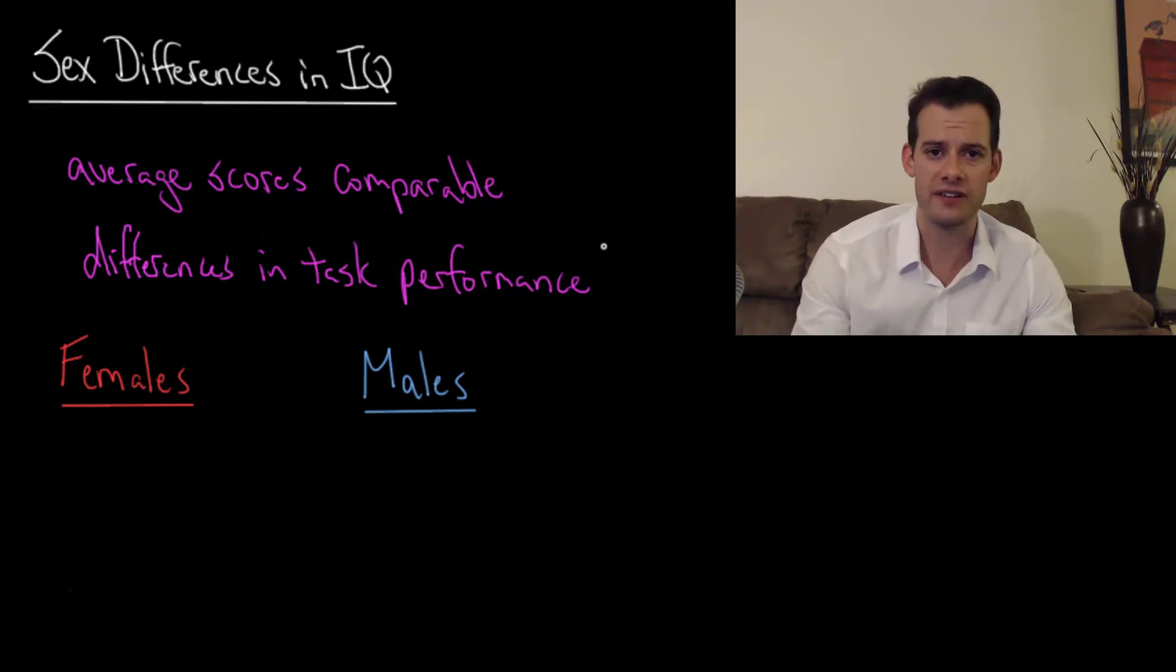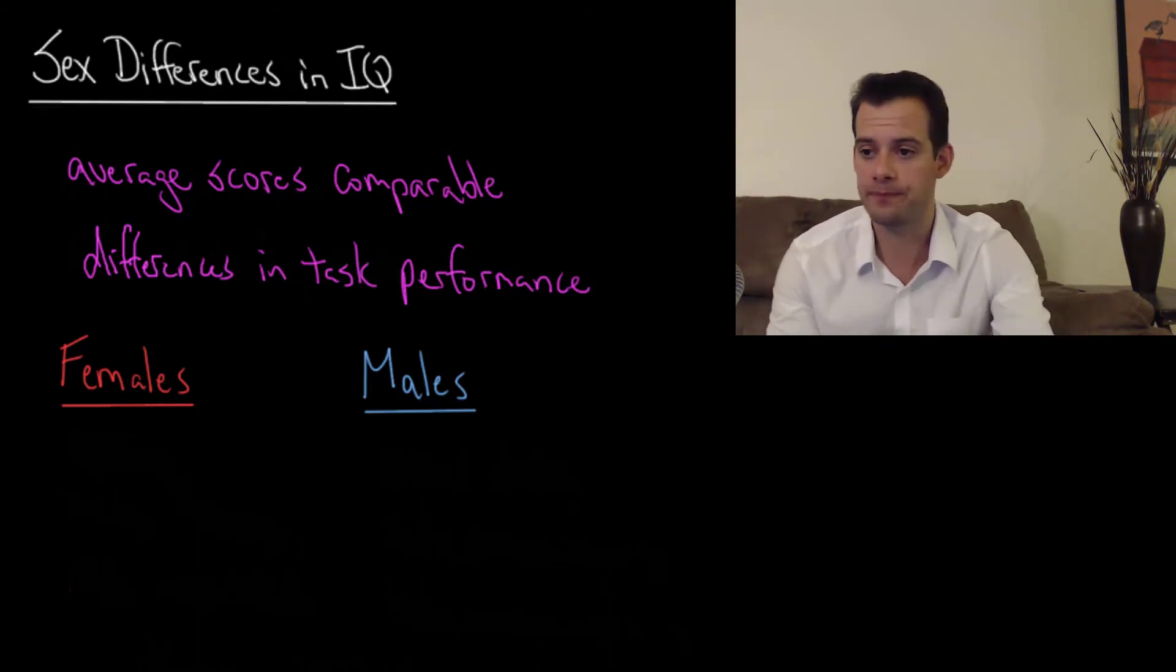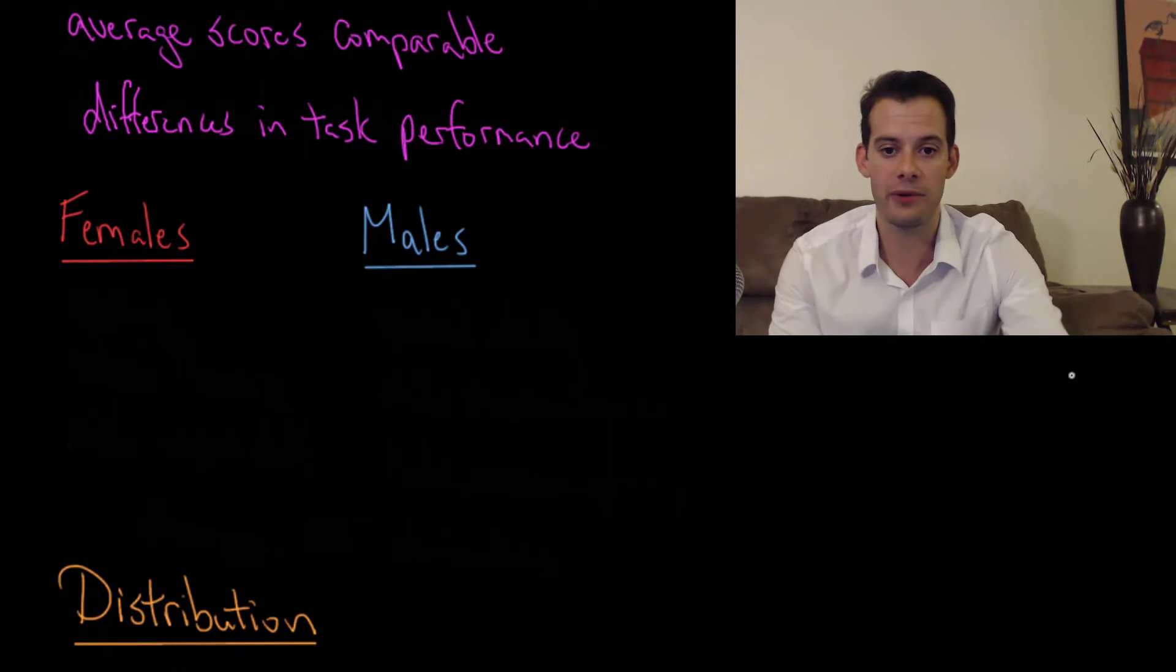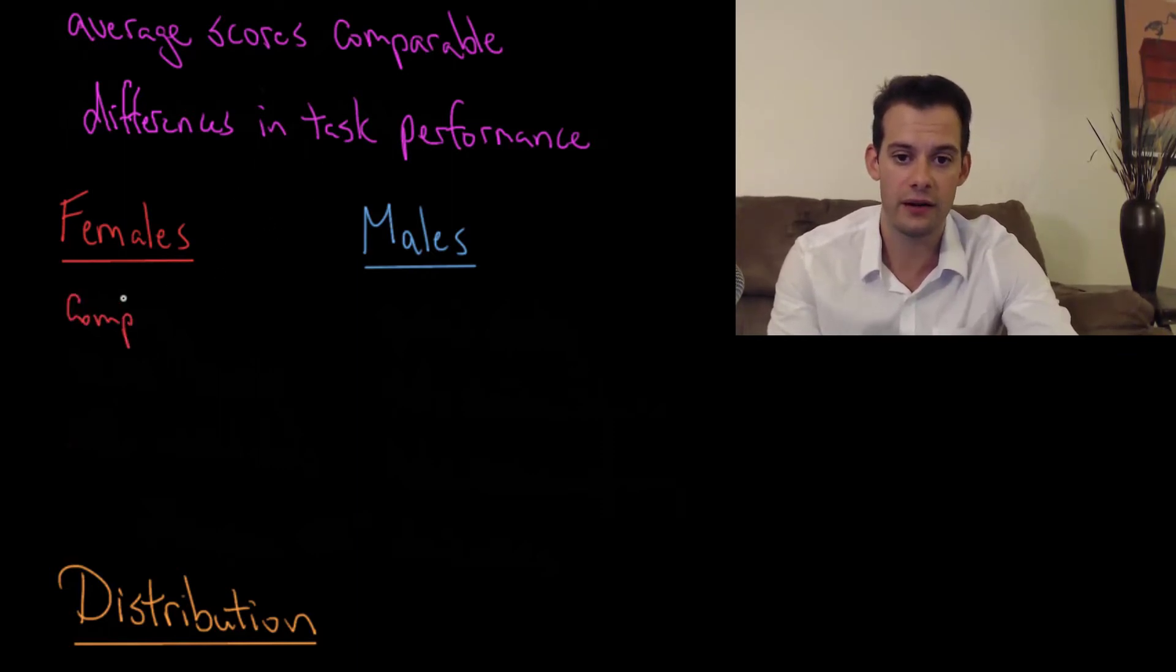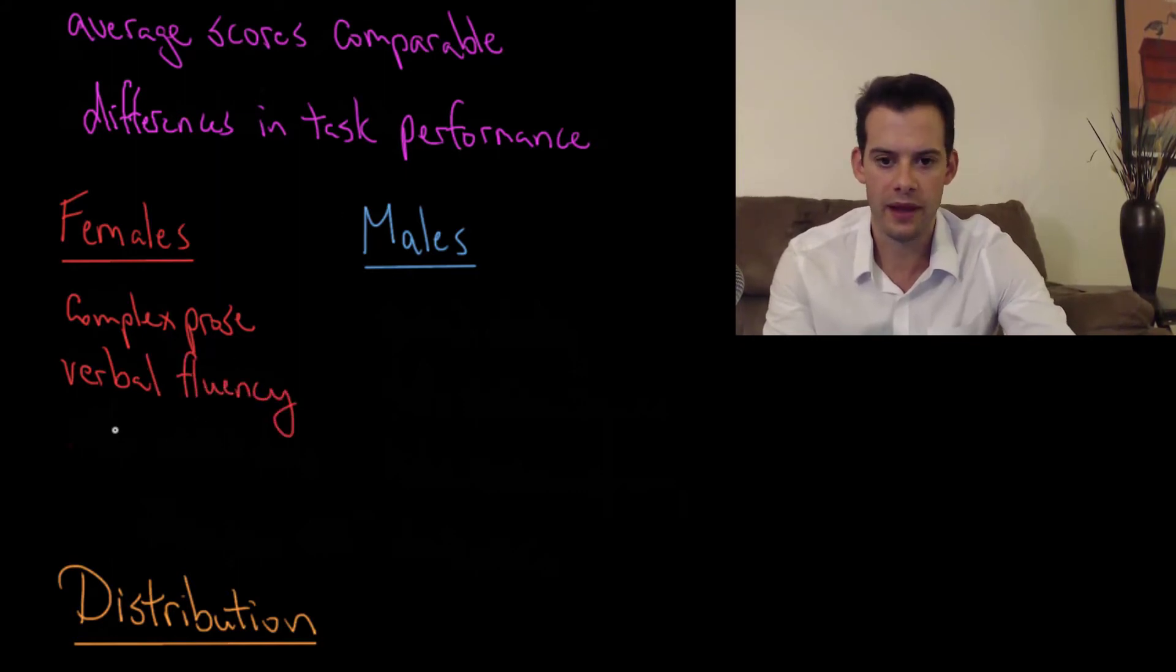So what are these differences in task performance? Well, if we look at the ability of males and females on these tasks, again we're looking at the overall population, we're not talking about individuals here. We find that females tend to be better on tasks involving things like complex prose, verbal fluency, and some types of fine motor skills.